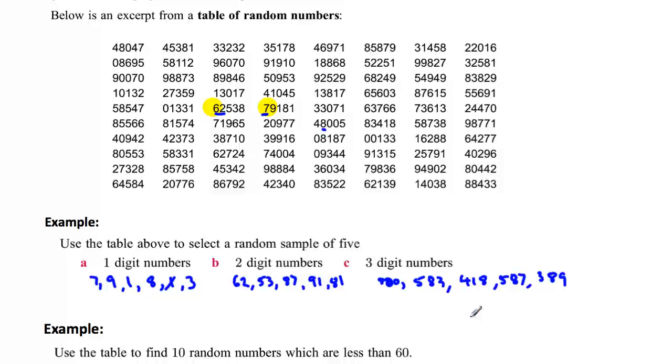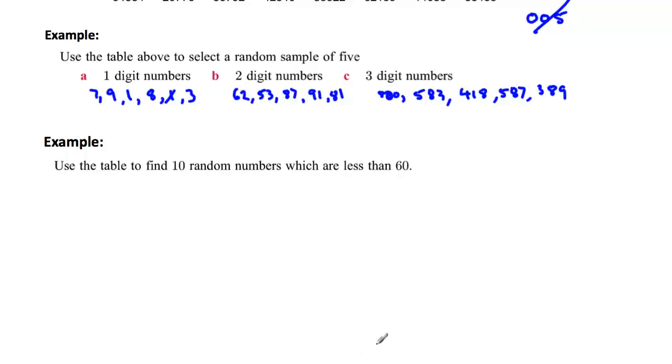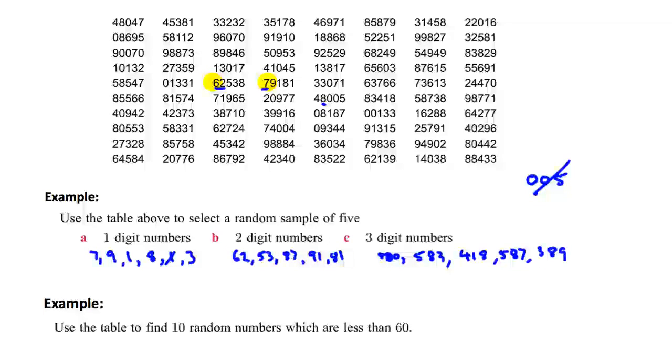Now, what would happen if a number like this came up and it was to be a three-digit number? Well, that actually isn't a three-digit number. That would be considered a single-digit number five, so you'd just have to skip that and move on to another number. And what happens if you get to the end of the line and you've run out of space? Simply go off in another direction and it doesn't matter which way you go. As long as you follow a path, you'll be right. The main thing is you just don't go and pick numbers out. You just take a point and you move off in a certain direction, and you stick with that until you can't go any further. Then you make a turn. And that's how these tables work.